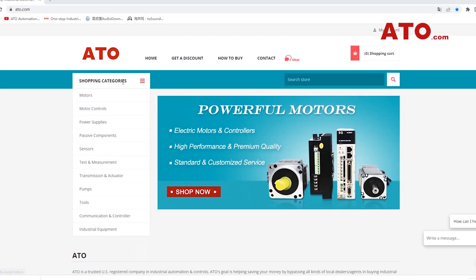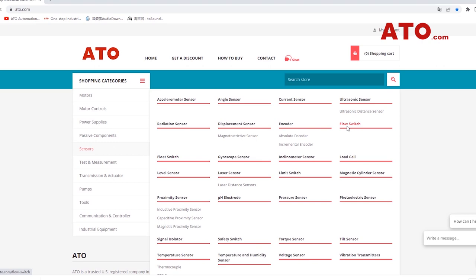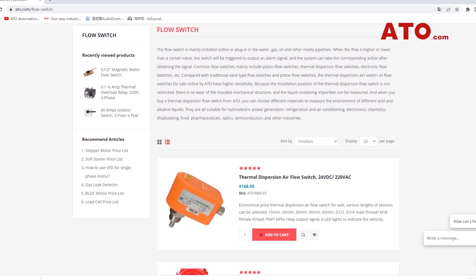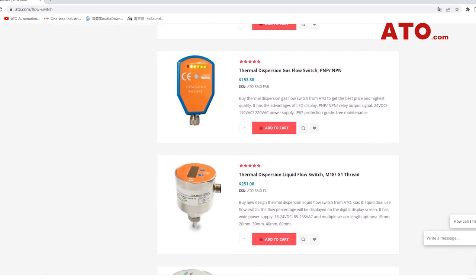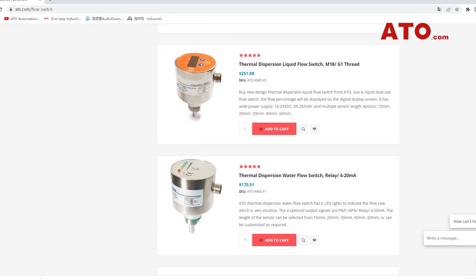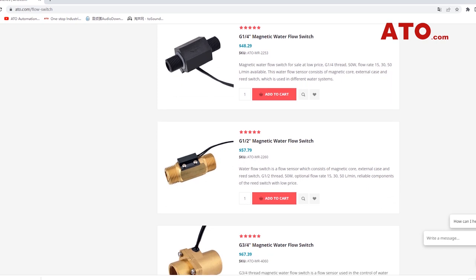The flow switch shown in this video is just one type among ATO's product line. We also have MPN and PMP types over a wide range of analog signals such as 4 to 20mA available for customers to choose from. Click the link below to explore our flow switch catalog and find the right type perfectly suited to your project.